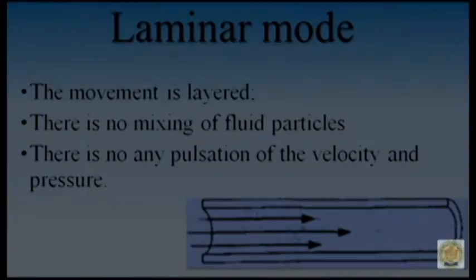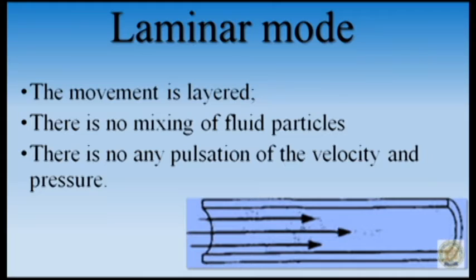Experiments were carried out for establishing the flow rate and velocity in the glass tube. At the same time, the tap was opened for supplying colored fluid. When one of these taps is opened and the flow rate and velocity have a small value, in the glass tube you can see a still thin colored stream. This is the laminar mode, where you cannot see pressure and velocity pulsations. The trajectory of particles are layered and parallel to the axis of the tube.